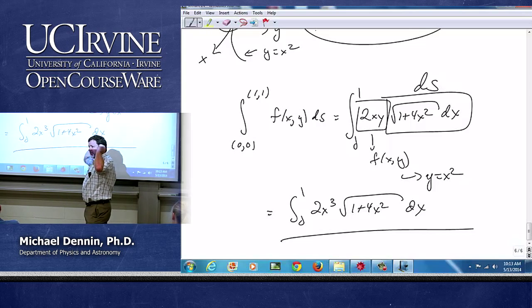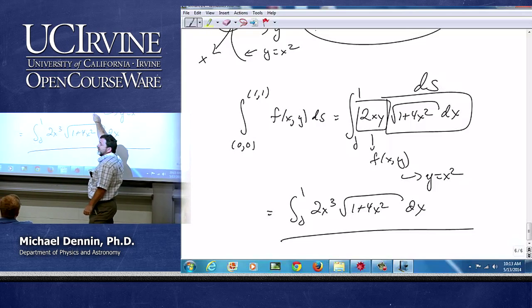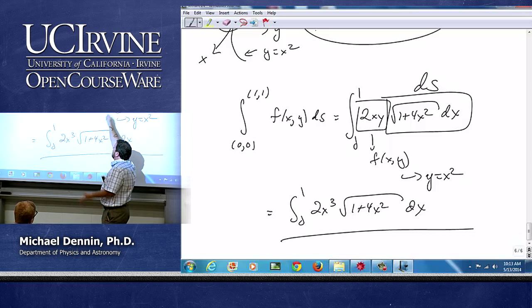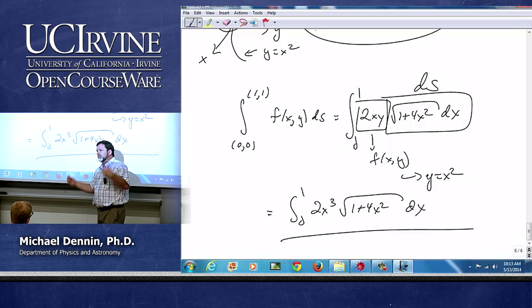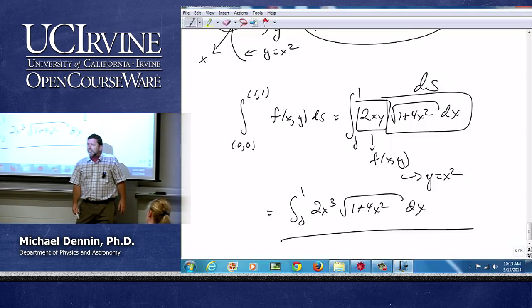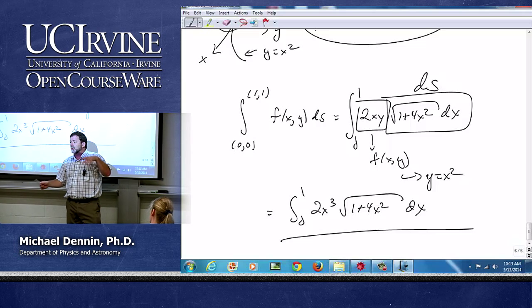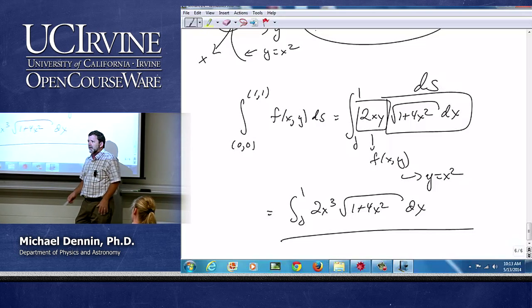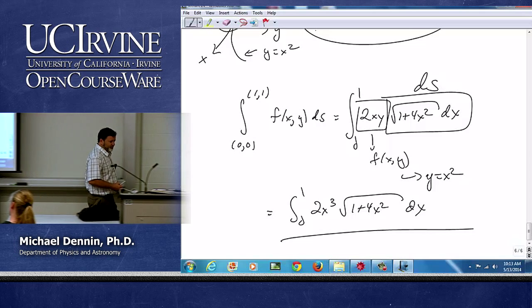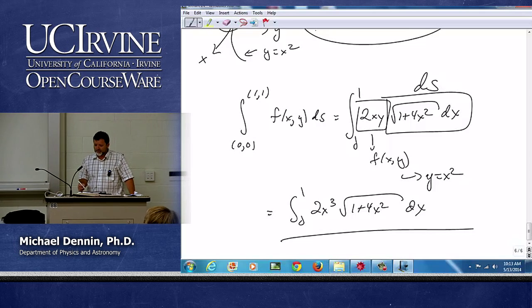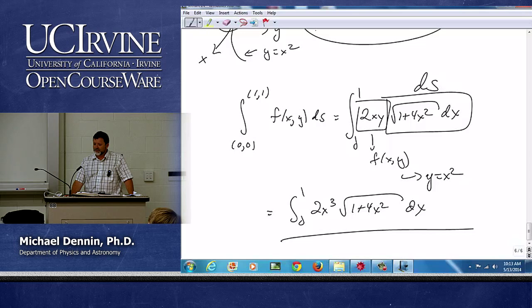And you can see right away that this is going to be something very different from that integral of x squared dx. That was the function, I just assigned that as the problem. That's the function, in this case, I want to integrate. That could have been anything. It could have been x squared plus 7y over 2x sine of xy. Any questions on that?